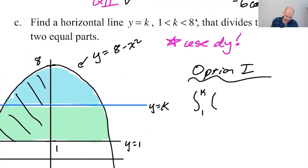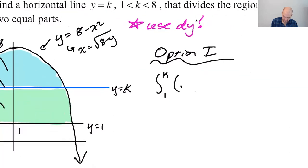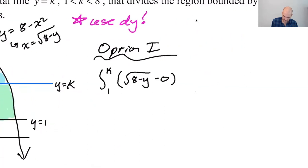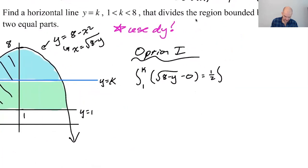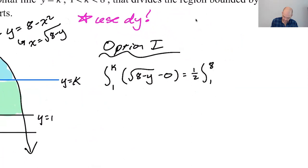So this is x squared equals 8 minus y, and then square root of 8 minus y. So right is the square root of 8 minus y. And then the left is 0. This should be equal to one half of the integral from 1 to 8 of the square root of 8 minus y dy. This is the one I'm going to do. Look at me forgetting the differential. No, never. Probably a lot though.